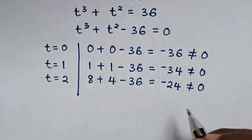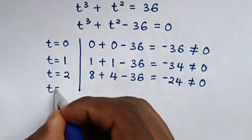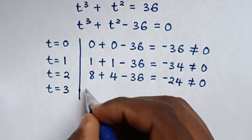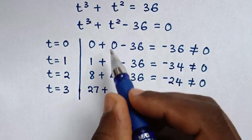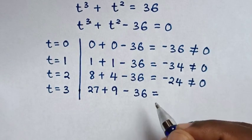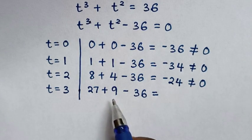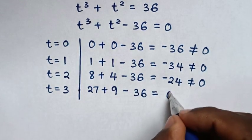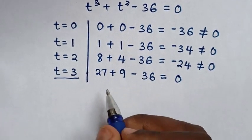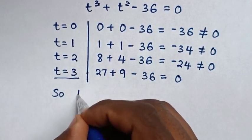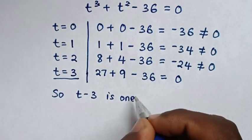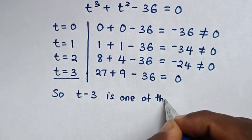Then in the next step, we will check with t is equal to 3: 3 power 3 is 27 plus 3 power 2 is 9 minus 36, which equals 27 plus 9 is 36 minus 36 is 0. Therefore, from t is equal to 3, so t minus 3 is one of the factors.